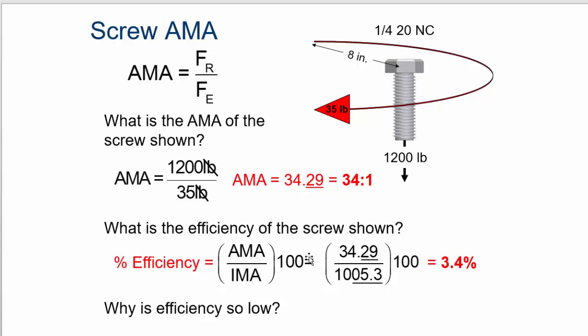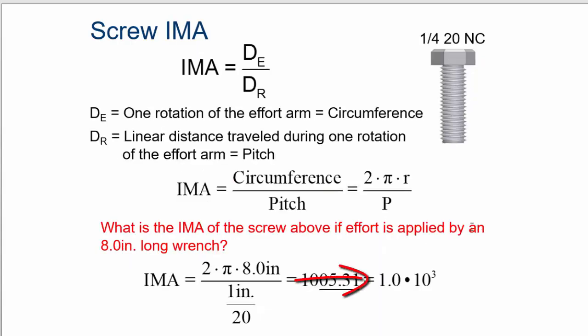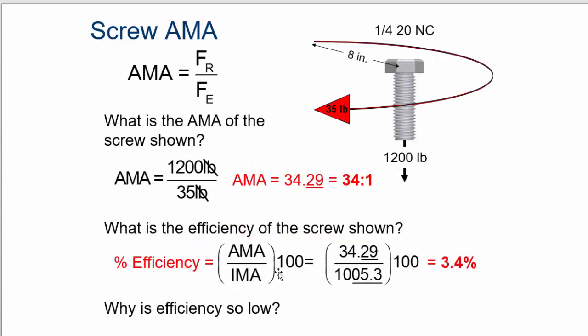And how do you get the efficiency? We got the IMA from the slide before, so it's 1,005.3. And we put that into our equation on the bottom, and we just got 34.2 for the AMA. We put that on the top and multiply that by 100, and it's only 3.4 percent efficient.